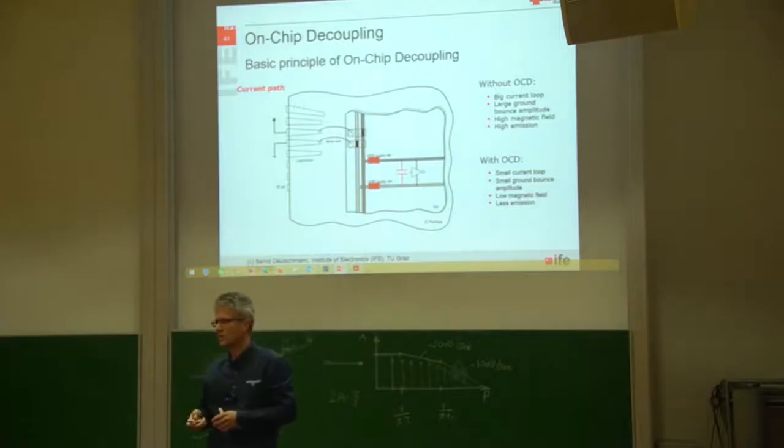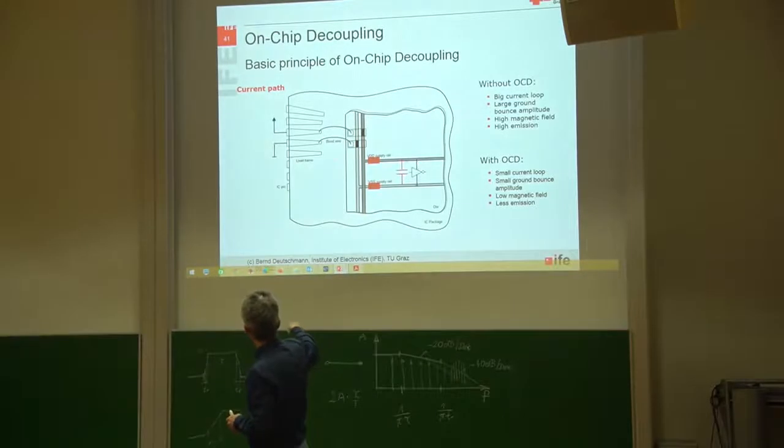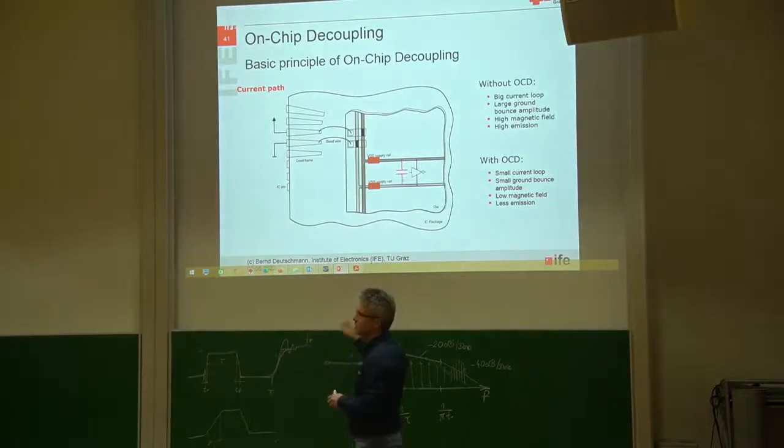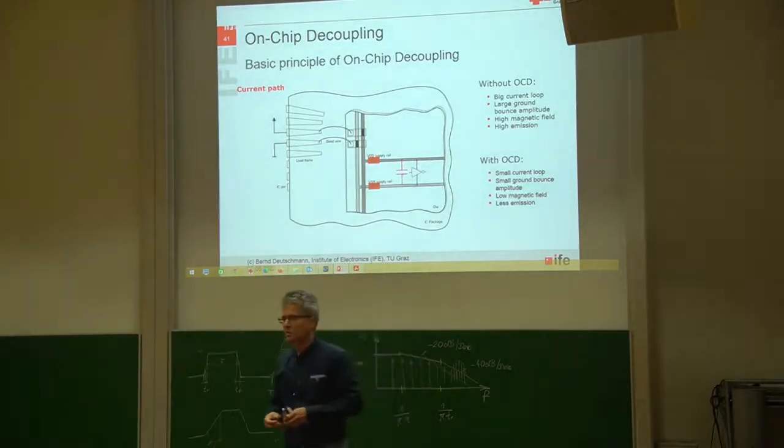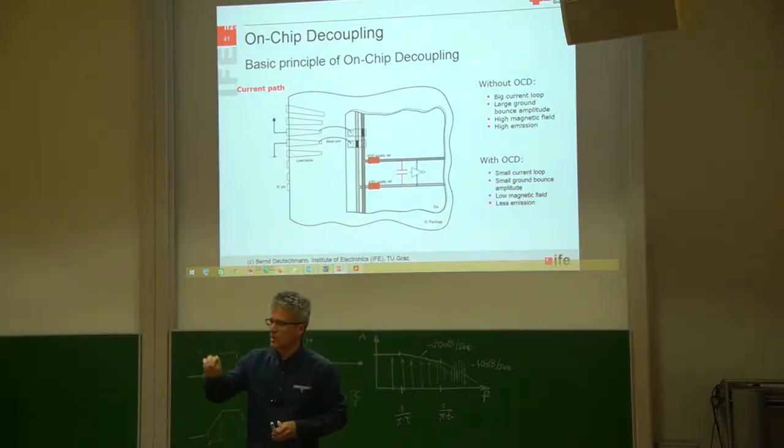If we don't have this capacitor, we have this big loop, and the big loop usually means a lot of electromagnetic emissions. So the trick is to place the decoupling capacitors in a strategic way there where quite a lot of switching activity is generated.